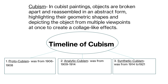So the timeline of cubism: one, proto-cubism from 1906 to 1908; two, analytic cubism was from 1909 to 1914; and then three, synthetic cubism was from 1914 to 1921.